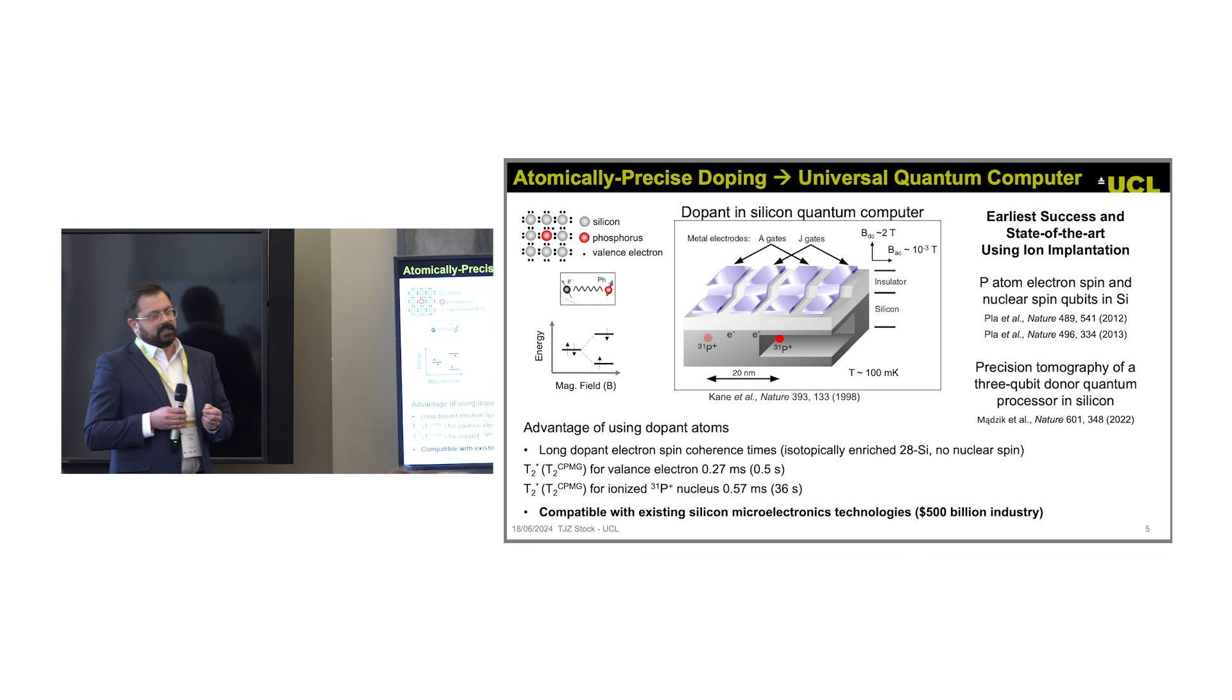There are many benefits of doing this in silicon. Silicon-28 has no nuclear spin, meaning it's a magnetically clean environment, and we can isotopically purify silicon. This caches out in long coherence times for your qubits, meaning the initial and final states are correlated over these lengths of time, and these are quite long for dopants in silicon.